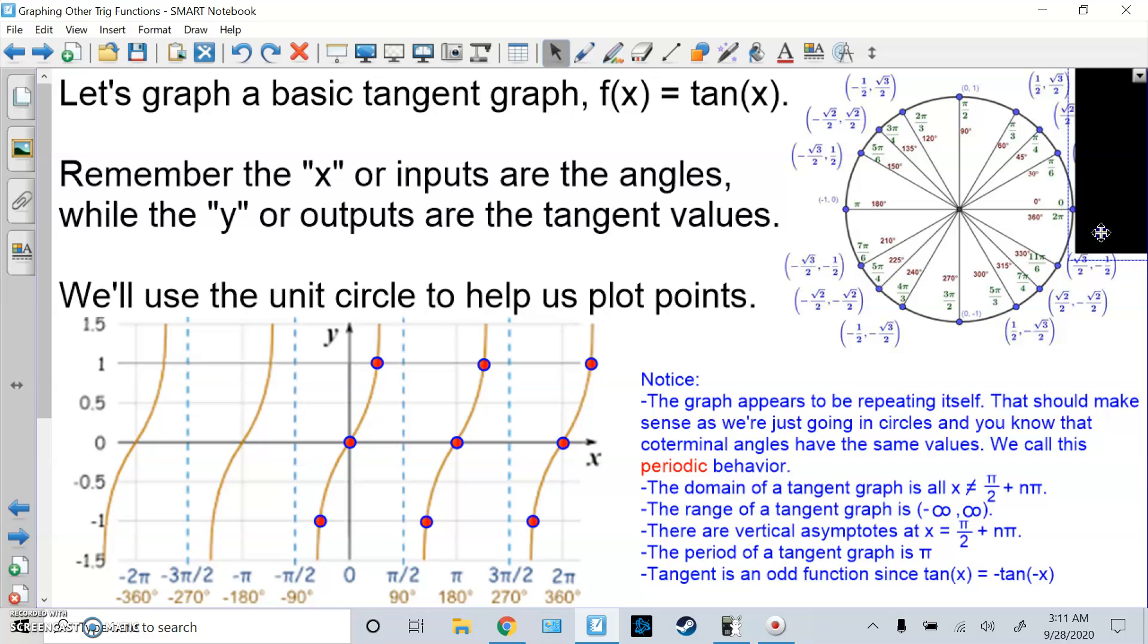So notice a lot of things. The graph appears to be repeating itself. That makes sense, we're going in circles, we're doing coterminal angles, so it's periodic behavior. The domain of a tangent graph is all x where x doesn't equal pi over 2 plus n*pi, because pi over 2 is where it has trouble. Pi over 2 is where the x values are 0, because when you divide by 0 it's undefined. So it can't do pi over 2 and it can't do 3 pi over 2. That's why it's pi over 2 plus half a revolution. So pi over 2, then we add 2 pi over 2, so full pi would be 3 pi over 2, then 5 pi over 2, 7 pi over 2, and so on.